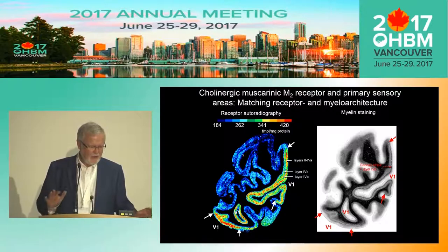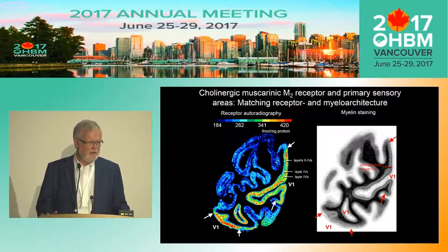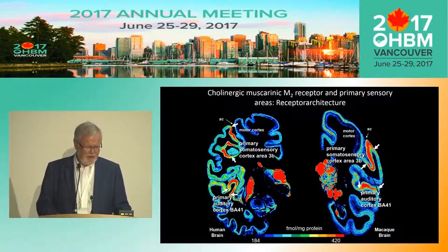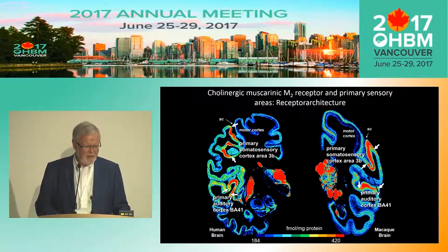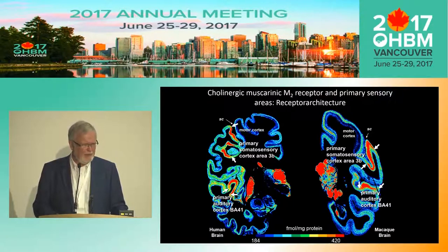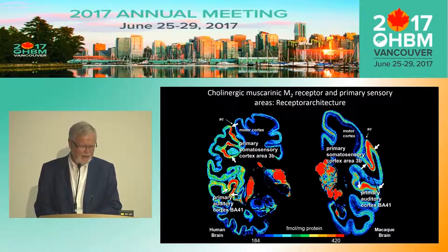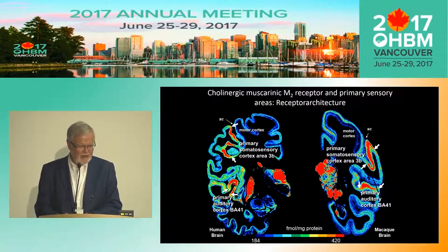Other cortical areas have lower or even much lower expressions of this receptor. You can see that the receptor labels different layers of the cortex. Looking at the whole human brain, the M2 receptor shows high density in the primary visual cortex, only in area 3B of the somatosensory cortex, and a very high density in the primary auditory cortex on the Heschl gyrus.